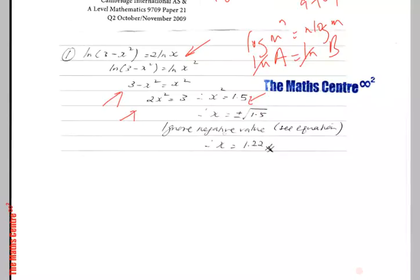We'll ignore the negative value. The reason being that logs of negative numbers don't exist. Look at the question - the original equation has ln(x). So logs of negative numbers don't exist.